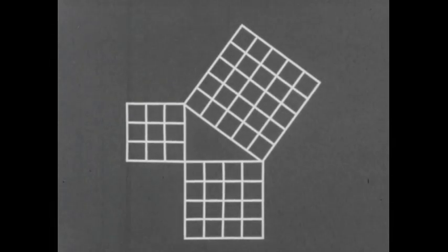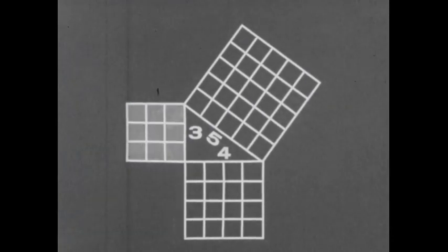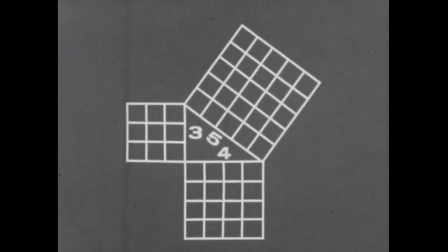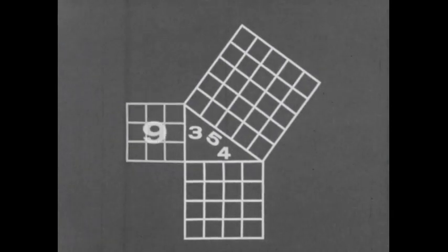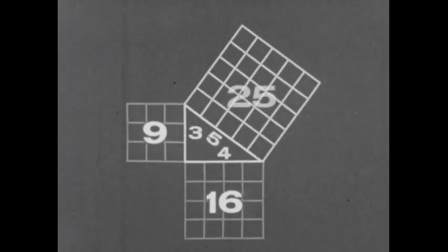In this right triangle, the sides are 3 units, 4 units, and 5 units in length. Using the Pythagorean theorem, let's see if the measure of this area plus the measure of this area is equal to the measure of the third area, the square on the hypotenuse. We proceed as follows: 3 squared is 9, 4 squared is 16, 9 plus 16 equals 25, the square on the hypotenuse.